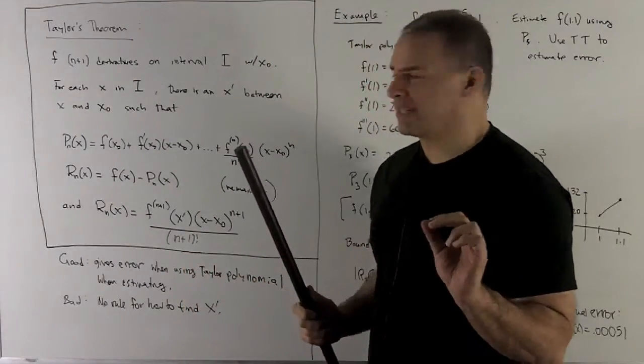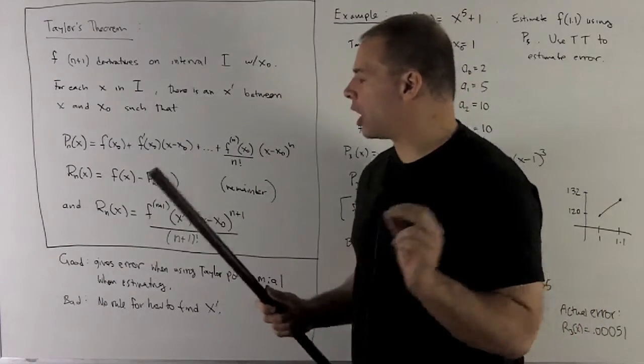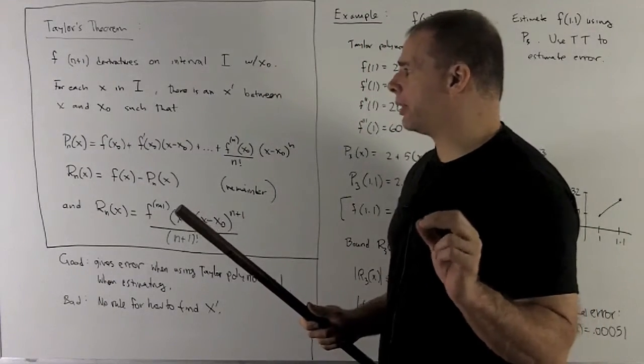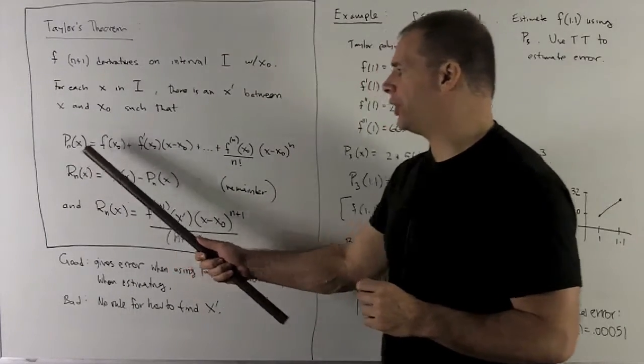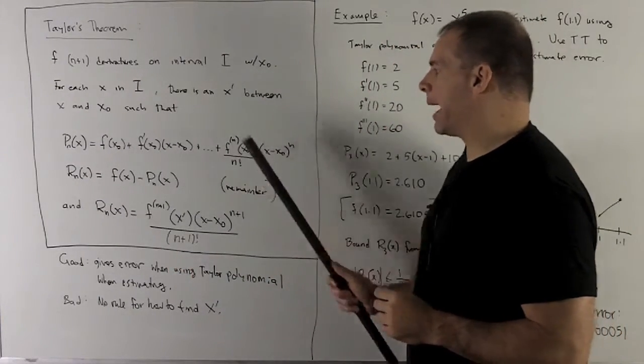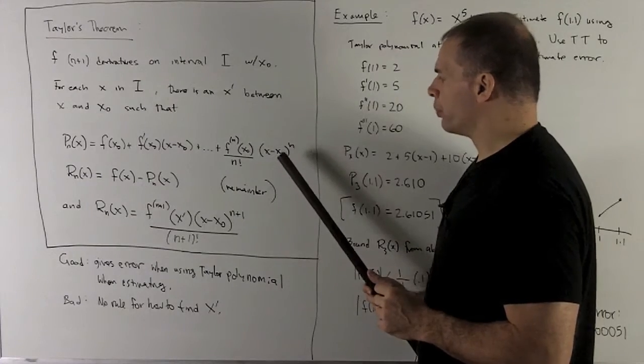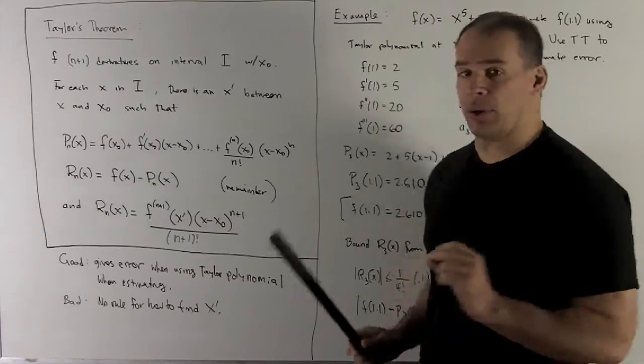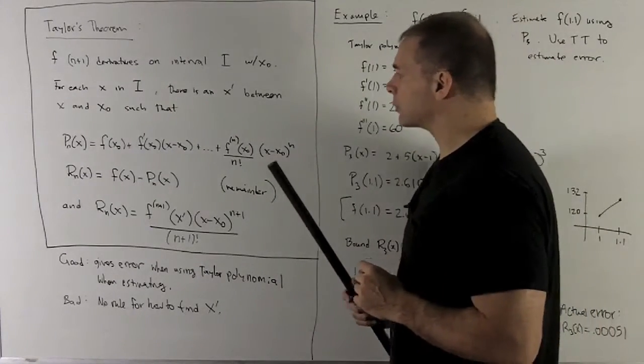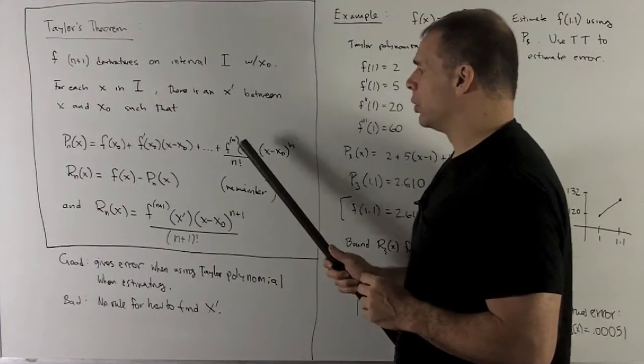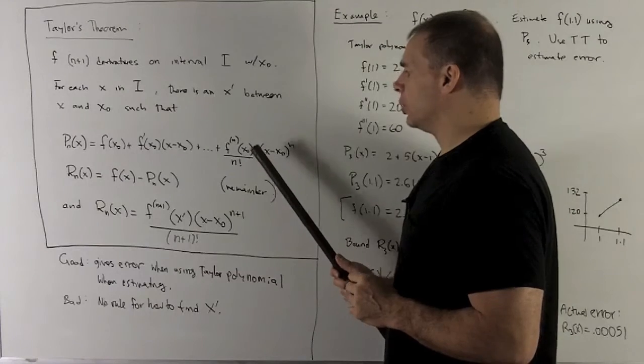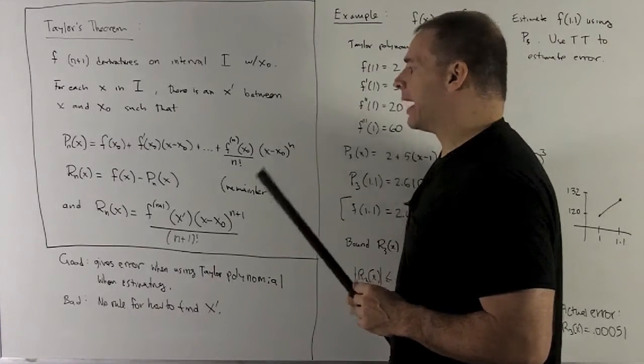Let's get some definitions up first. Recall our Taylor polynomial for function f, the nth Taylor polynomial. We're going to load up a bunch of powers of x minus x₀ raised to a power. x₀ is going to be our center. The coefficients of each power are given by taking the nth derivative of f, evaluating at the center, and then dividing by n factorial.